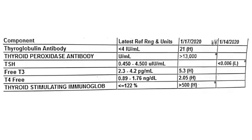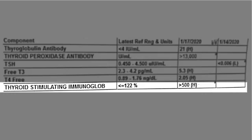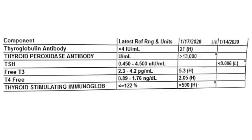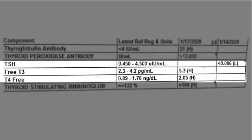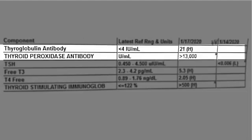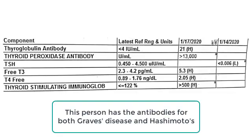Here we see another example where the thyroid-stimulating immunoglobulins are clearly elevated. A percentage is used here — the range is less than 122%, but either way clearly elevated at greater than 500%. We see other markers as well: this person is clearly hyperthyroid with TSH depressed, free T3 and free T4 elevated, and they also have elevated thyroid peroxidase antibodies as well as thyroglobulin antibodies. So this person has the antibodies for both Graves' disease and Hashimoto's.